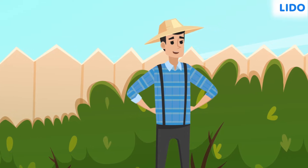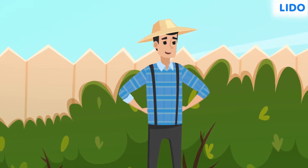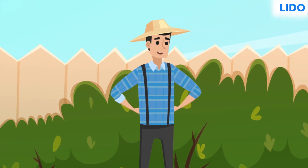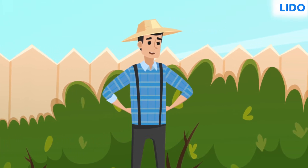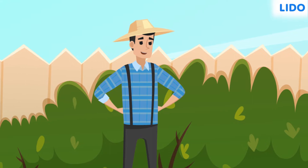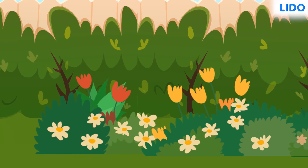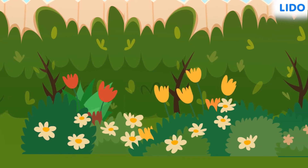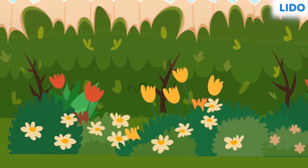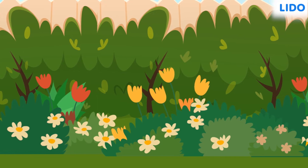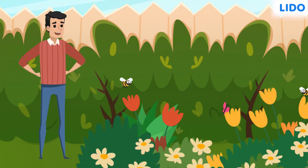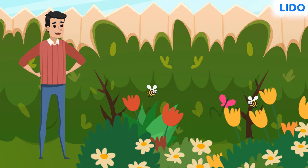Hi there. Roshan's father is a botany professor. He is a great gardener and has several plants in their garden that have bright, colourful and beautiful flowers. Roshan often observes bees and butterflies moving from one flower to another.